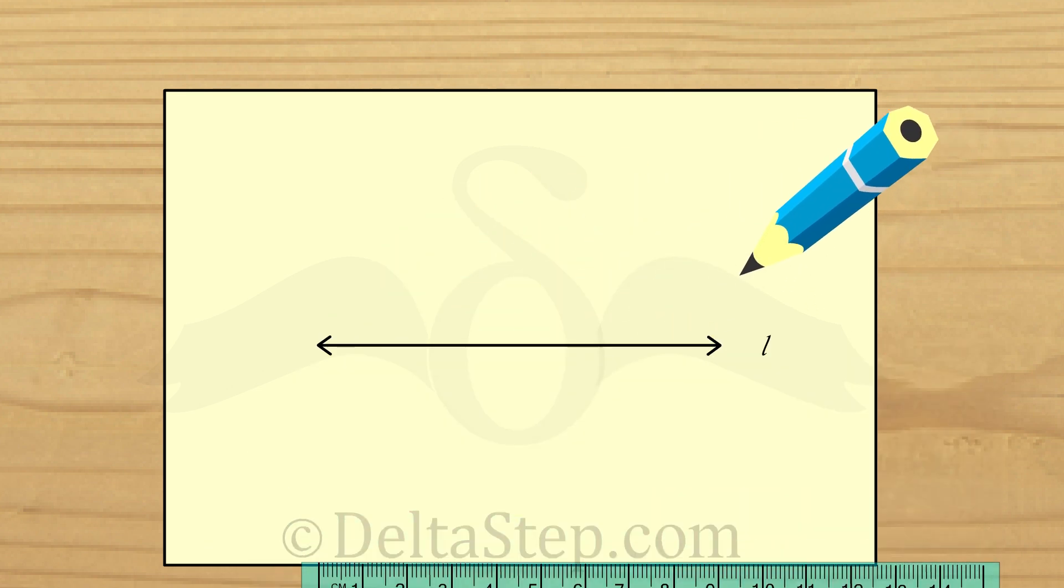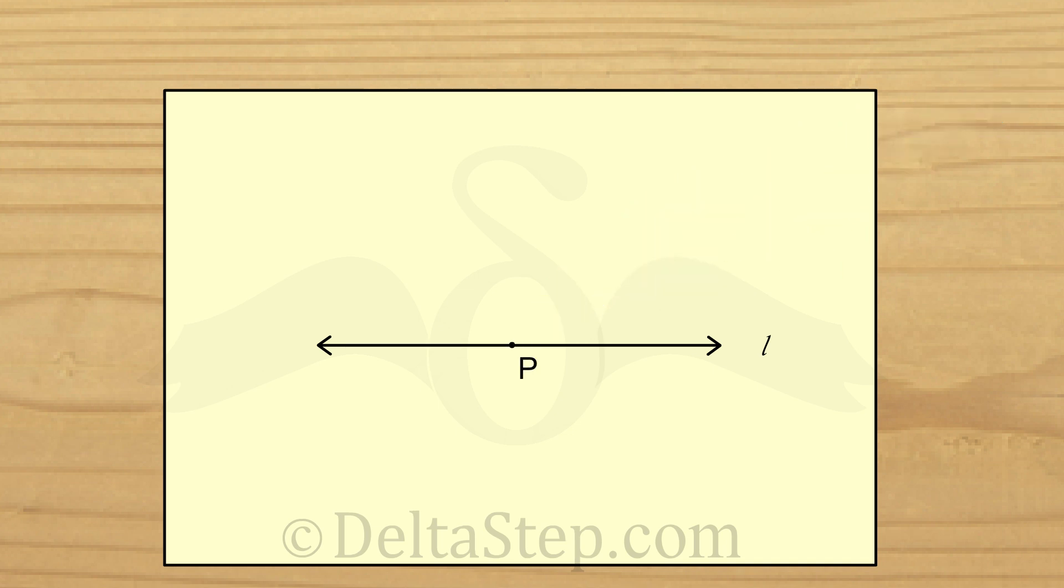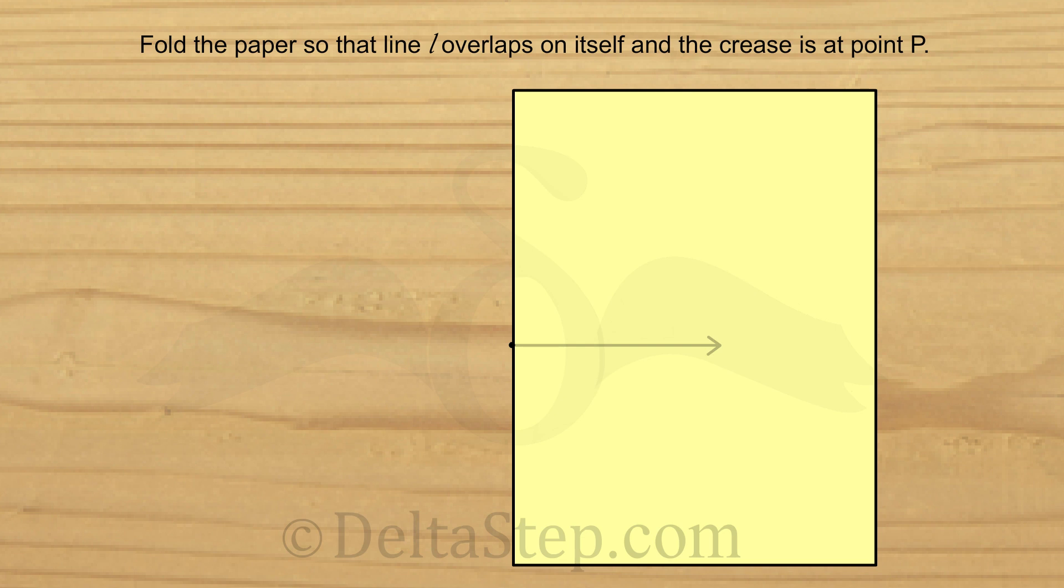So, we take a paper. It is better if we take a tracing paper or a transparent paper and we draw a line L on it. Let us mark a point P anywhere on L. Now, we fold the paper such that line L is reflected on itself or overlaps on itself and we adjust the fold so that the crease of the fold passes through the marked point P.